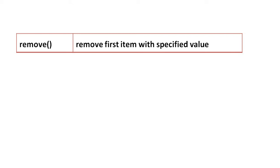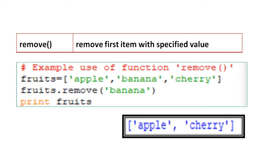remove() removes the first item with a specified value. For example, fruits assigned apple, banana, cherry — fruits.remove(banana) — after printing fruits, the result is apple, cherry.